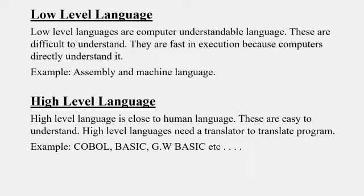High level languages are close to human language and are easy to understand. High level languages need a translator to translate the program — they are English-like, human-understandable languages. They need a converter or translator to run. Examples include COBOL (Common Business Oriented Language), BASIC (Beginner's All-purpose Symbolic Instruction Code), GW-BASIC, C, C++, C-Sharp, and Python. These are many high level languages.